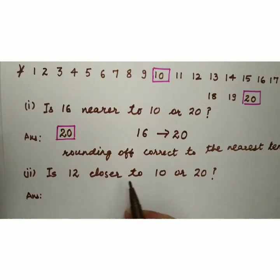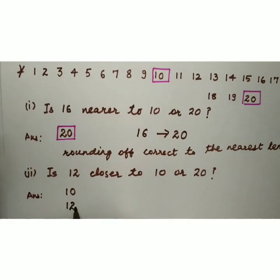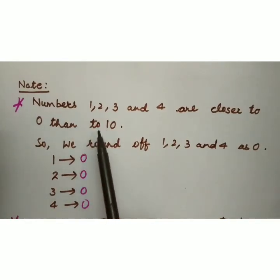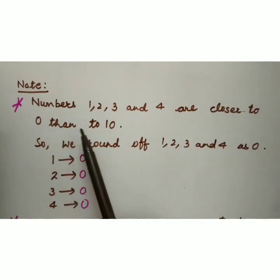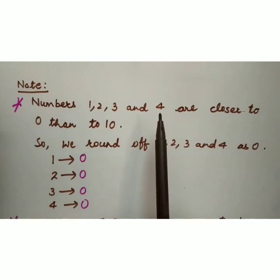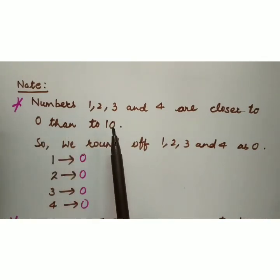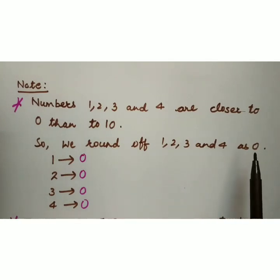Now next part, is 12 closer to 10 or 20? 12, 10 ke zyadha close hain ya 20 ke? So obviously 12, 10 ke zyadha close hain. Then we will write 10. And then we will round off 12, then we will write 10.